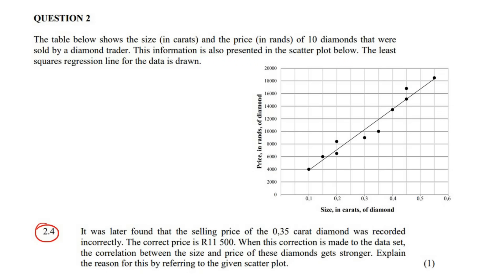This question says it was later found that the selling price of the 0.35 carat was recorded incorrectly. Let's go to the 0.35 - it was originally recorded at 10,000 rand, but they say the correct price is 11,500. So that's going to be there instead. When this correction is made to the data, the correlation between the size and price of these diamonds gets stronger. Explain this reason by referring to the given scatter plot.